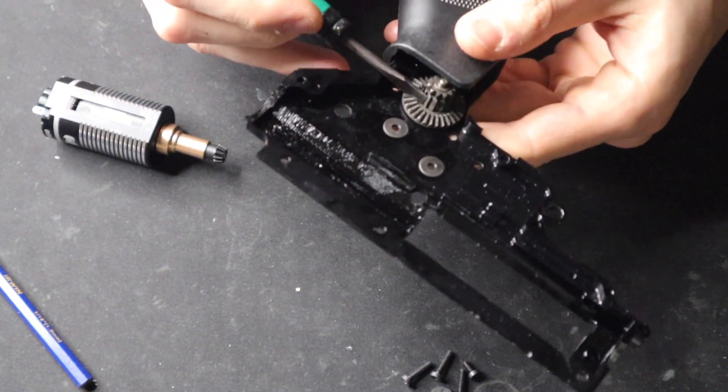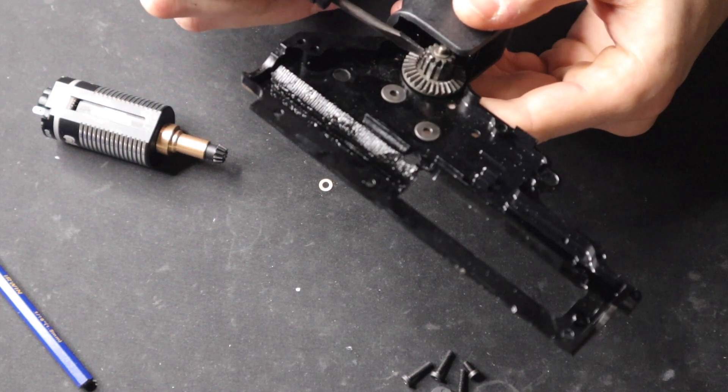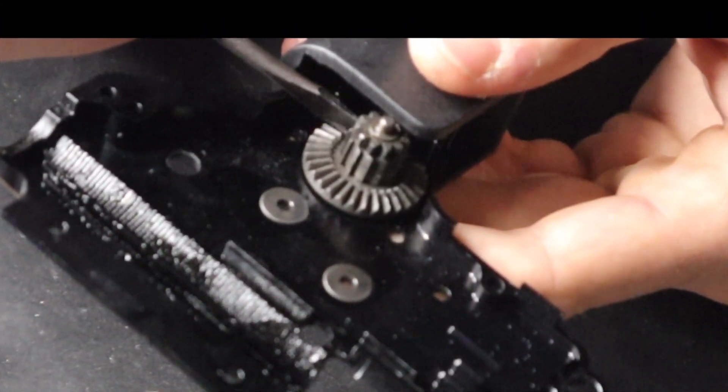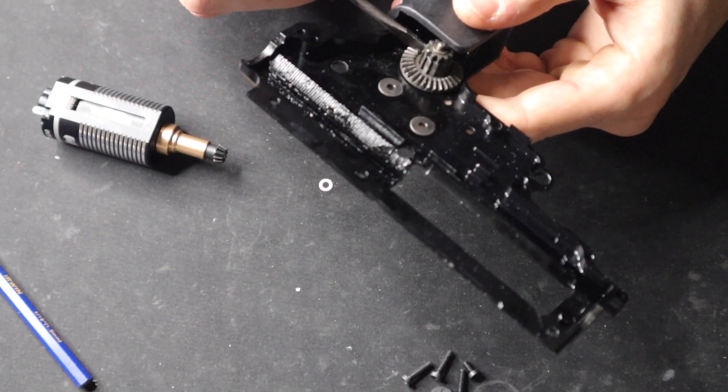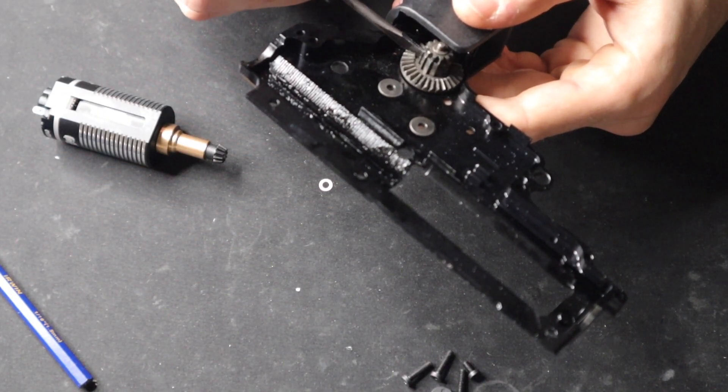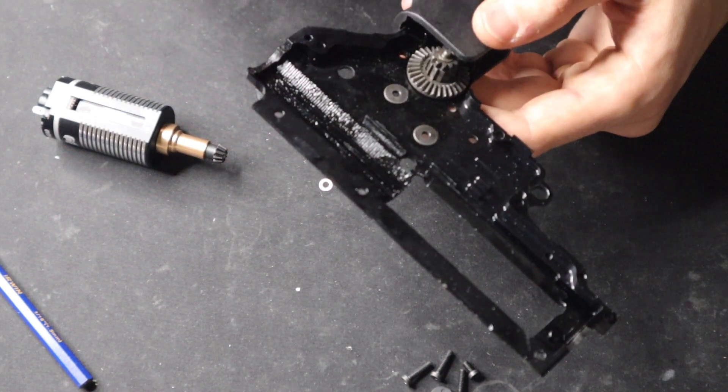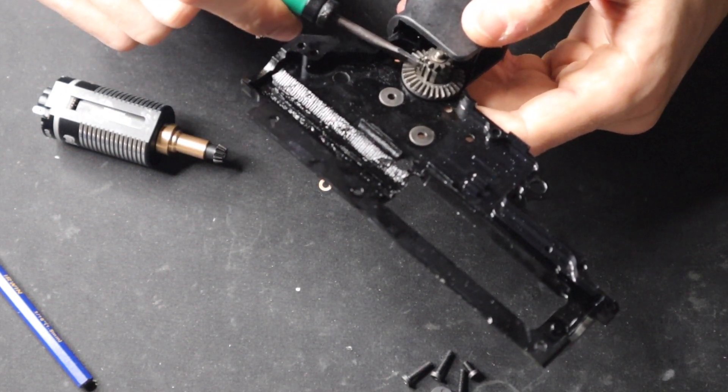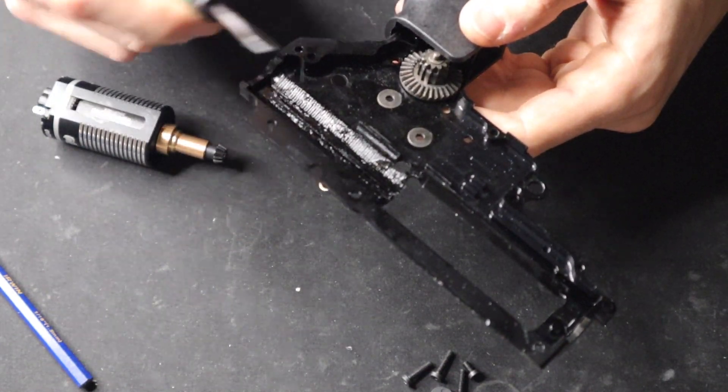Something to note about Siegetek gear sets, their bevel gear has so many more anti-reverse latch points than like SHS. And so what that will allow is more adjustability of pre-cock. You can achieve more precise pre-cock settings by adjusting how far back you want the piston to go because the anti-reversal latch has more spots to stop the gear set. So that's something to think about.